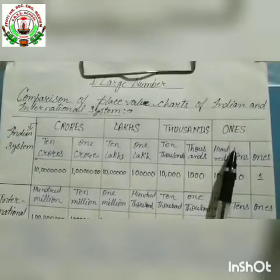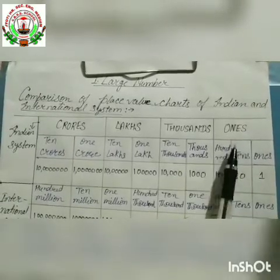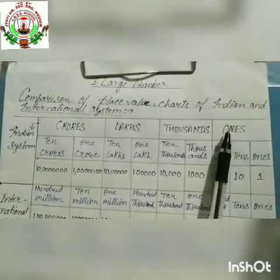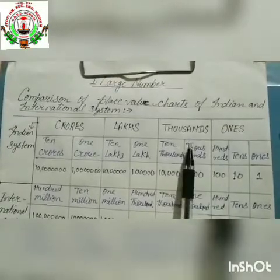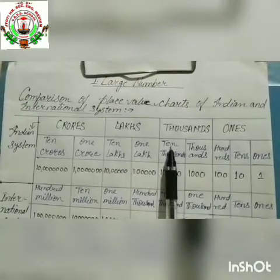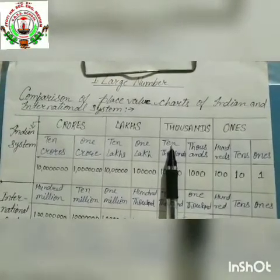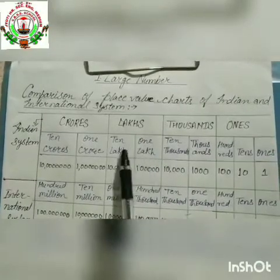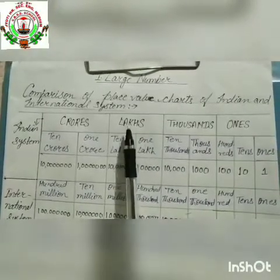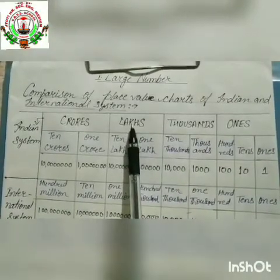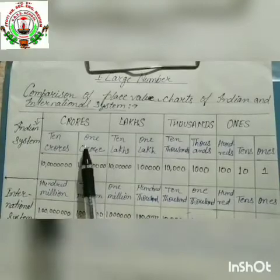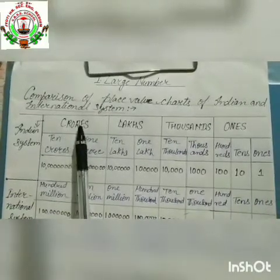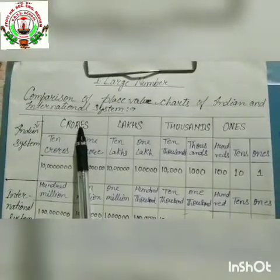In the Indian system, the first three places make one period, the next two places make the thousands period, the next two places make the lakhs period, and the last two places make the crores period.